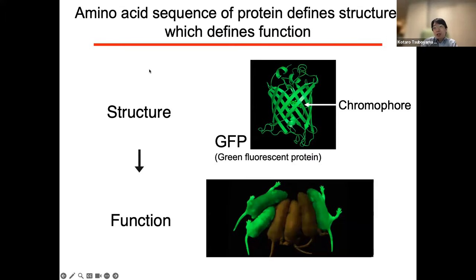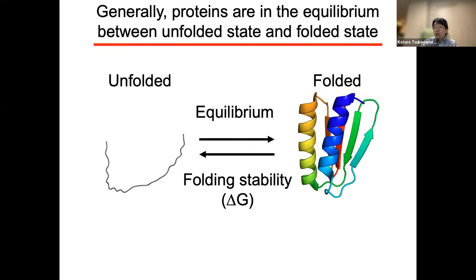First I'd like to talk about what the folding stability of protein is and why this is so important. Basically, the amino acid sequence of a protein defines structure, and structure defines function. This is a very basic principle of proteins. For example, GFP or green fluorescence protein has a beta-barrel structure, and inside the structure there is a chromophore — that's why we can see green fluorescence from this protein. But the structure of GFP looks very static, which is not true. Almost all proteins exist in equilibrium between unfolded and folded states.